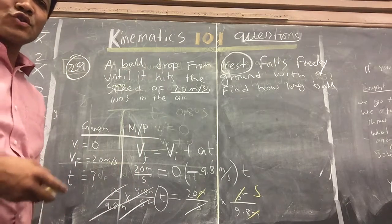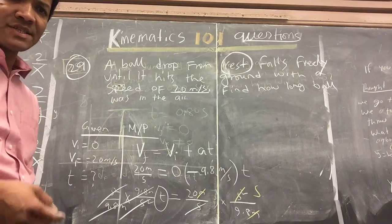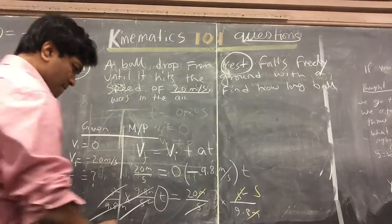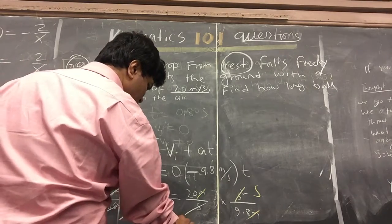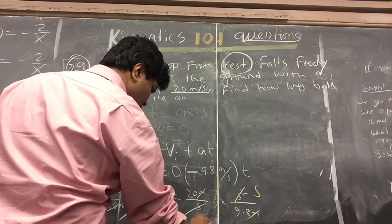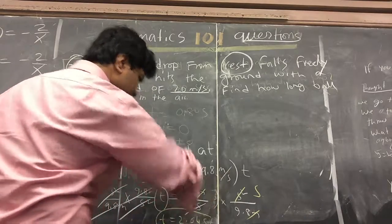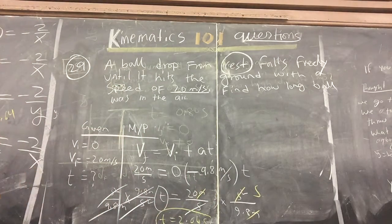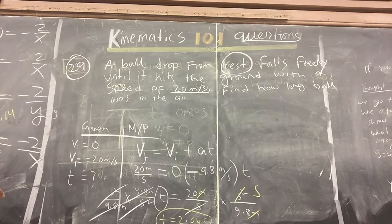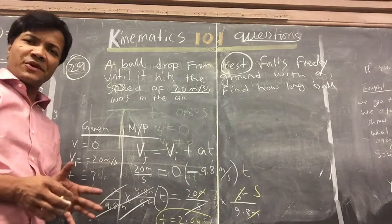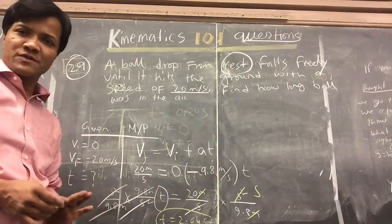And 20 divided by 9.8 is 2.04. So t is 2.04 seconds. So the ball was in the air for 2.04 seconds.